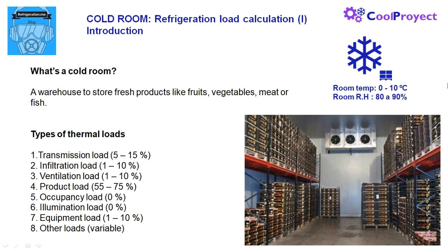In numbers five and six is the occupancy and illumination. We can ignore both of them for cold rooms because there are not usually people permanently working there. Number seven, we have to consider the equipment load — the heat due to evaporator fans and the frost resistances.